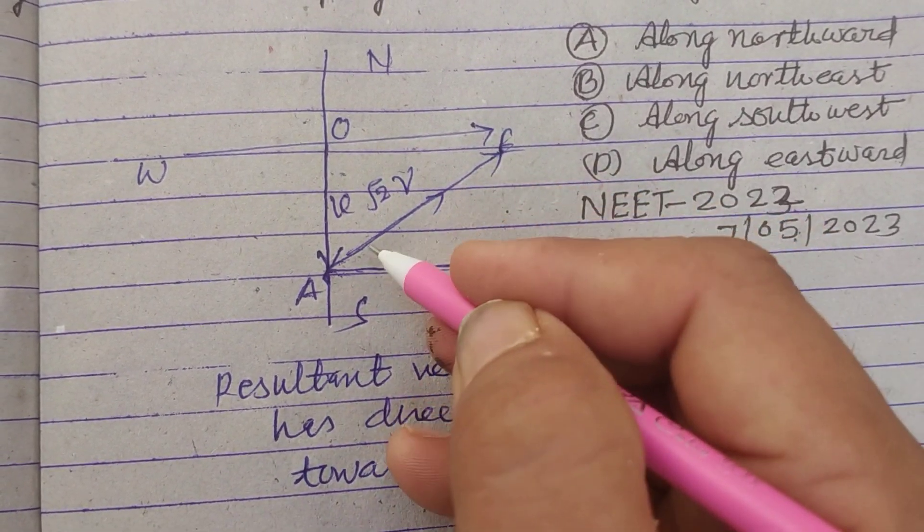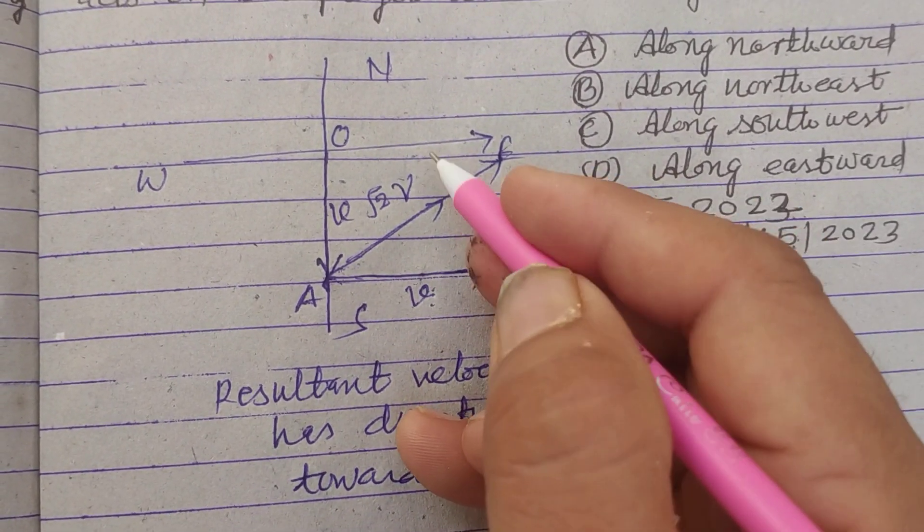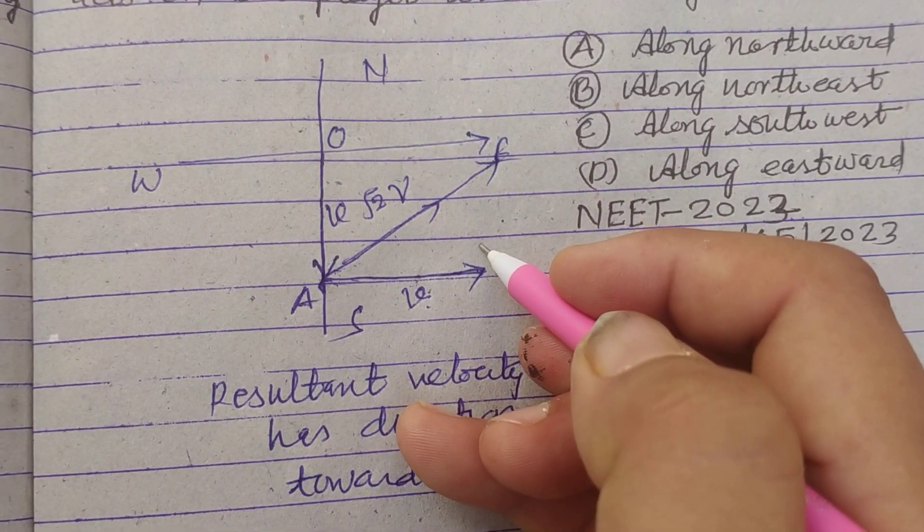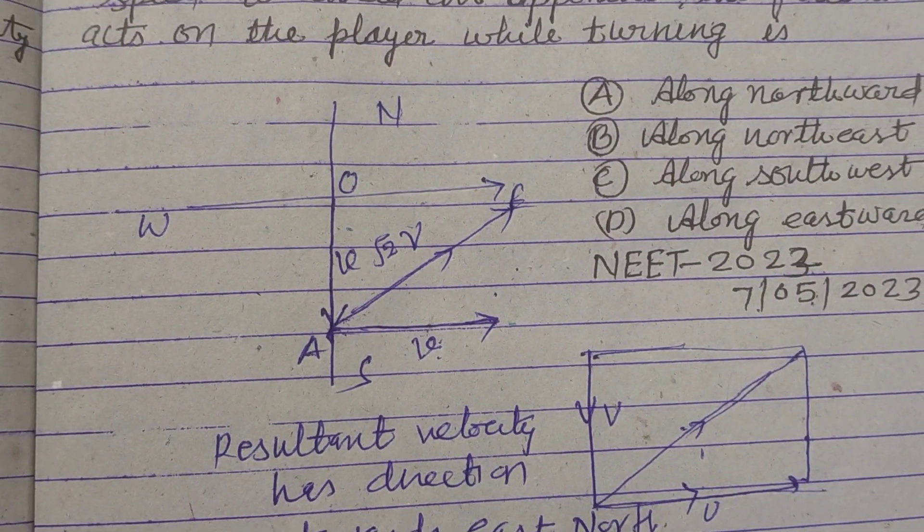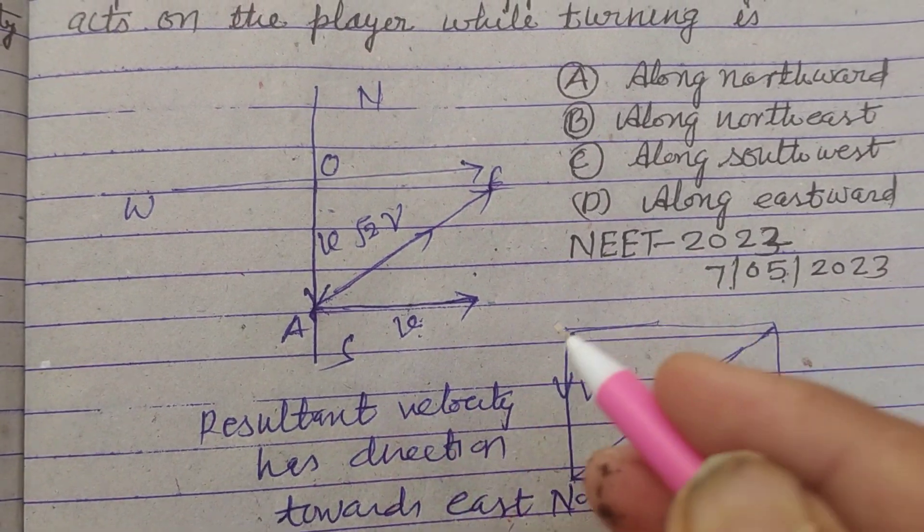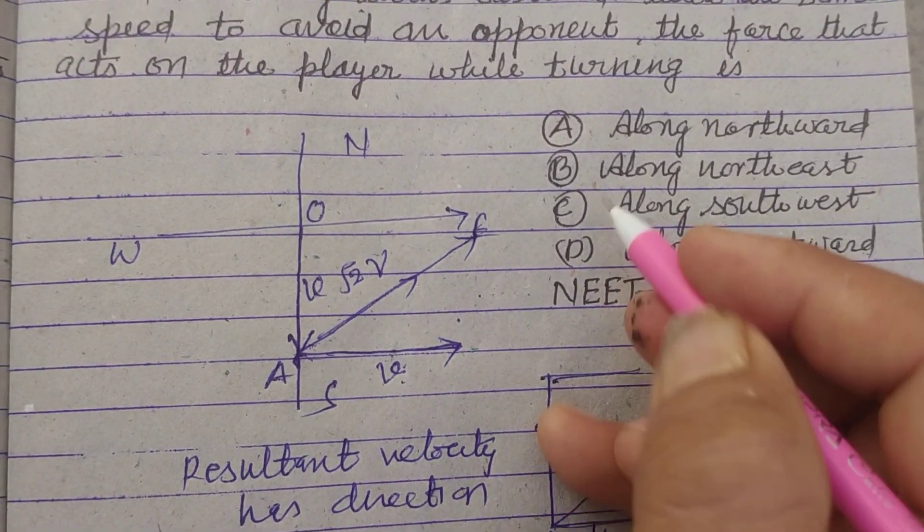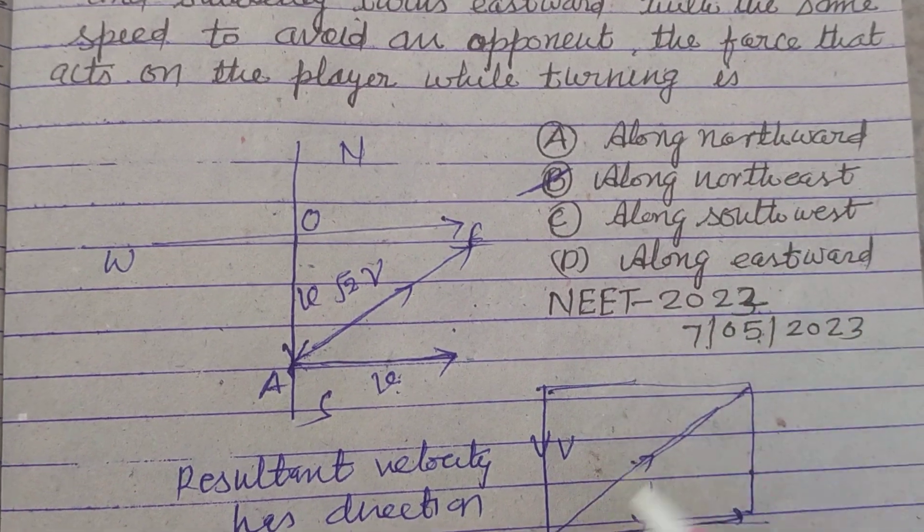So the direction of the resultant velocity is towards the northeast. Therefore, its acceleration is also towards northeast and force also acts in this direction. So answer is B, along northeast.